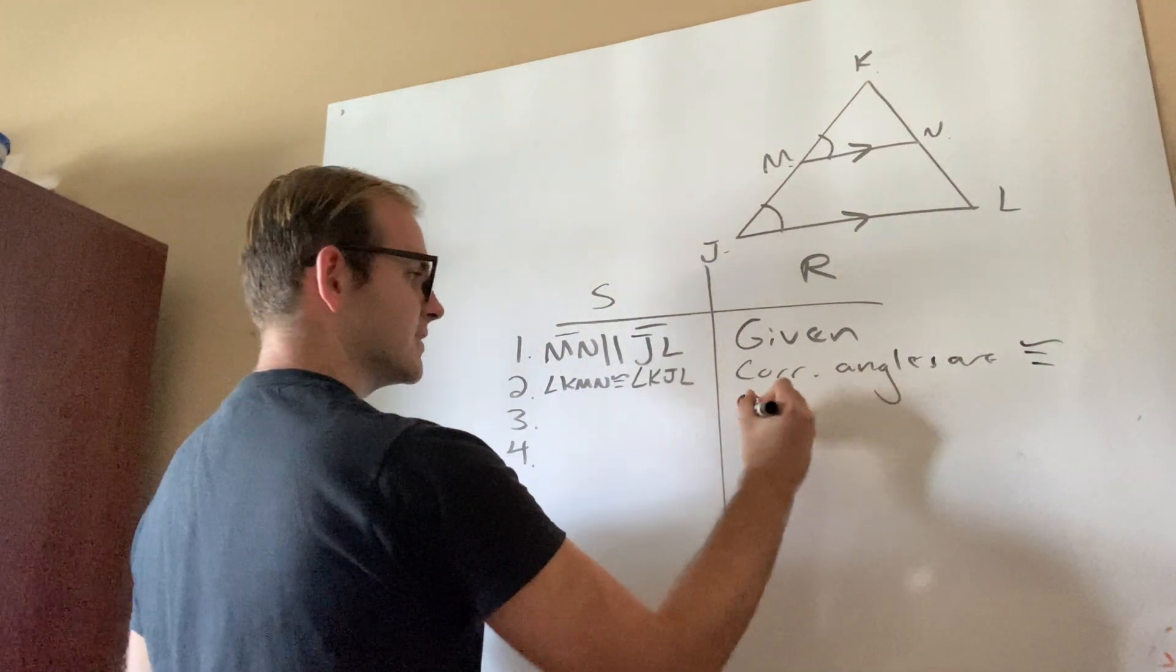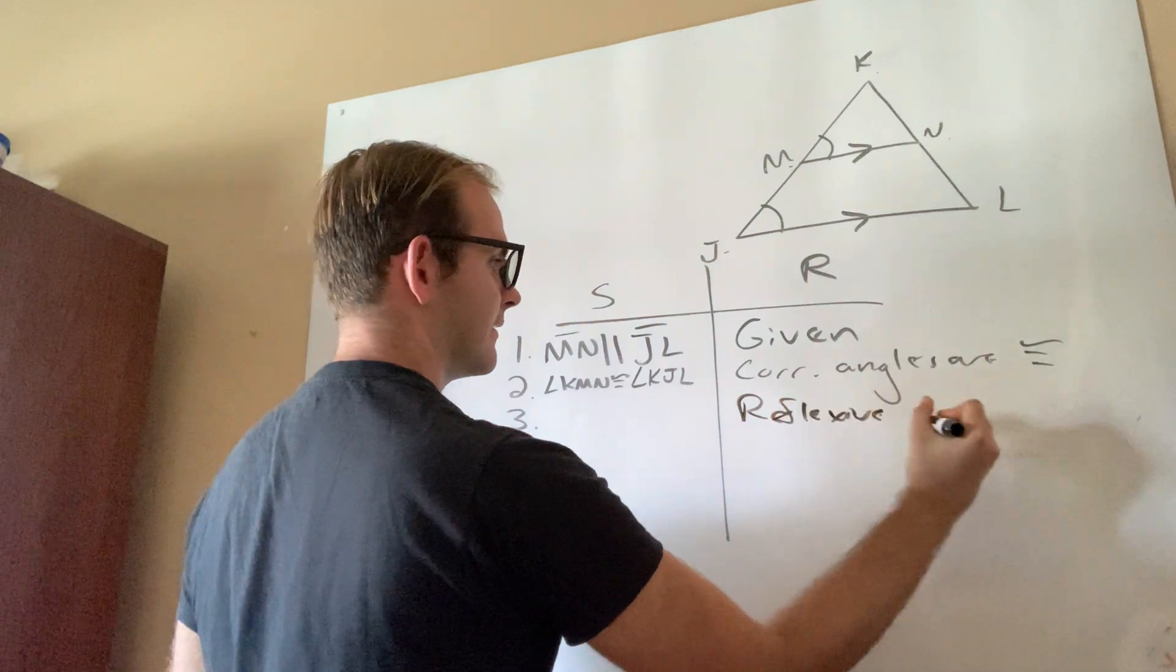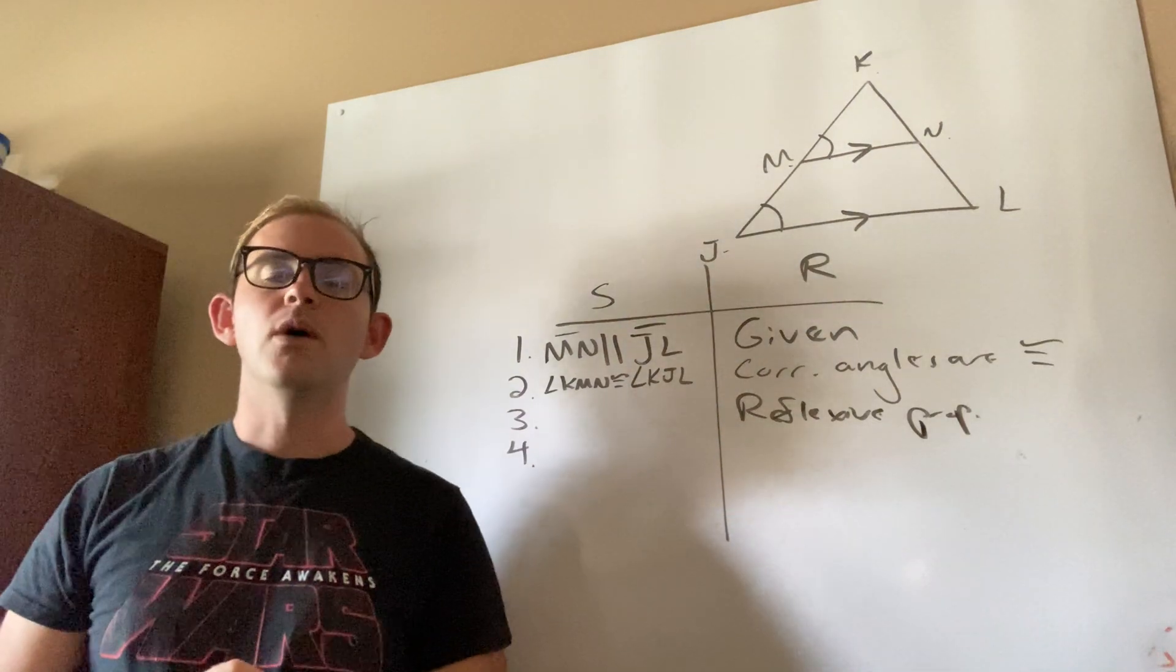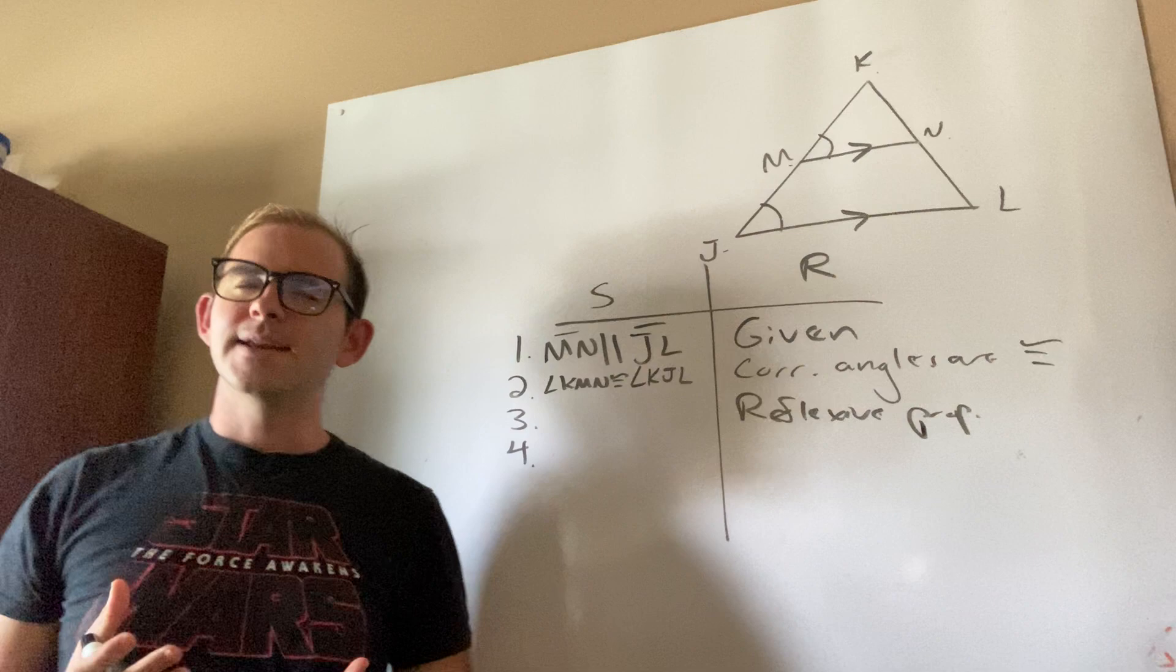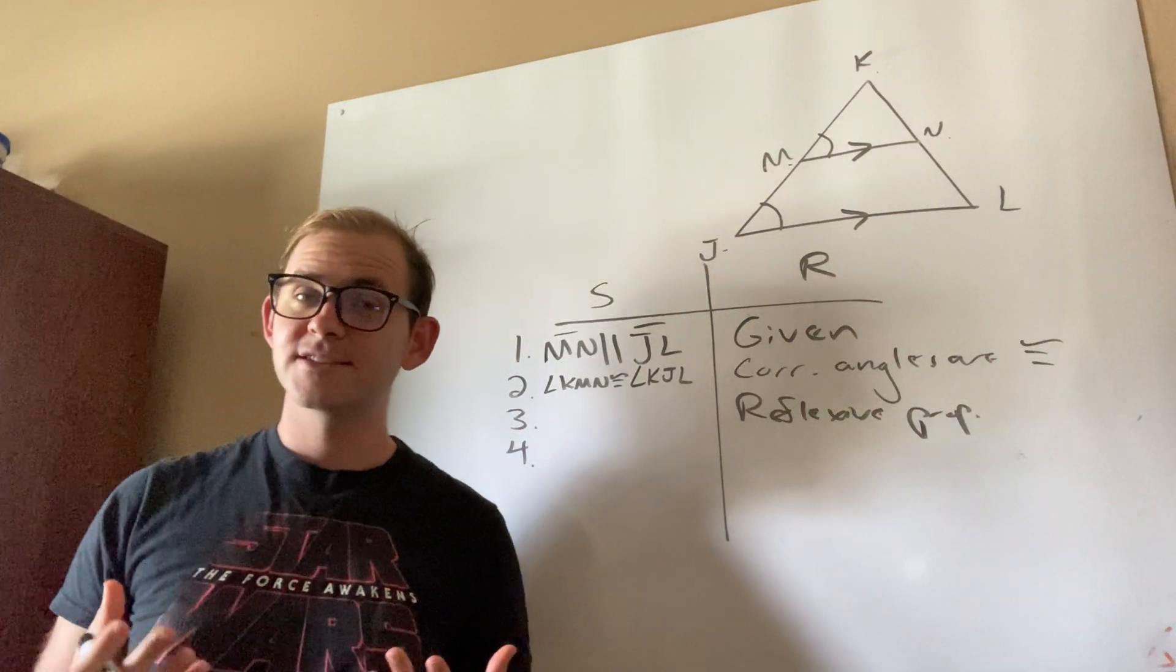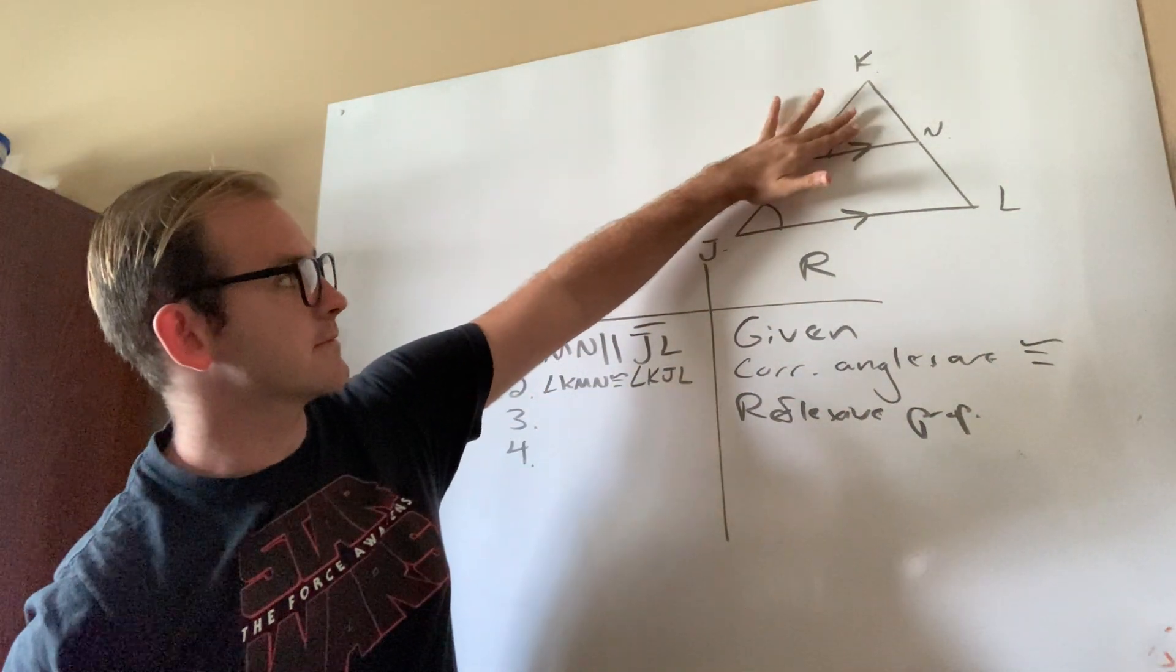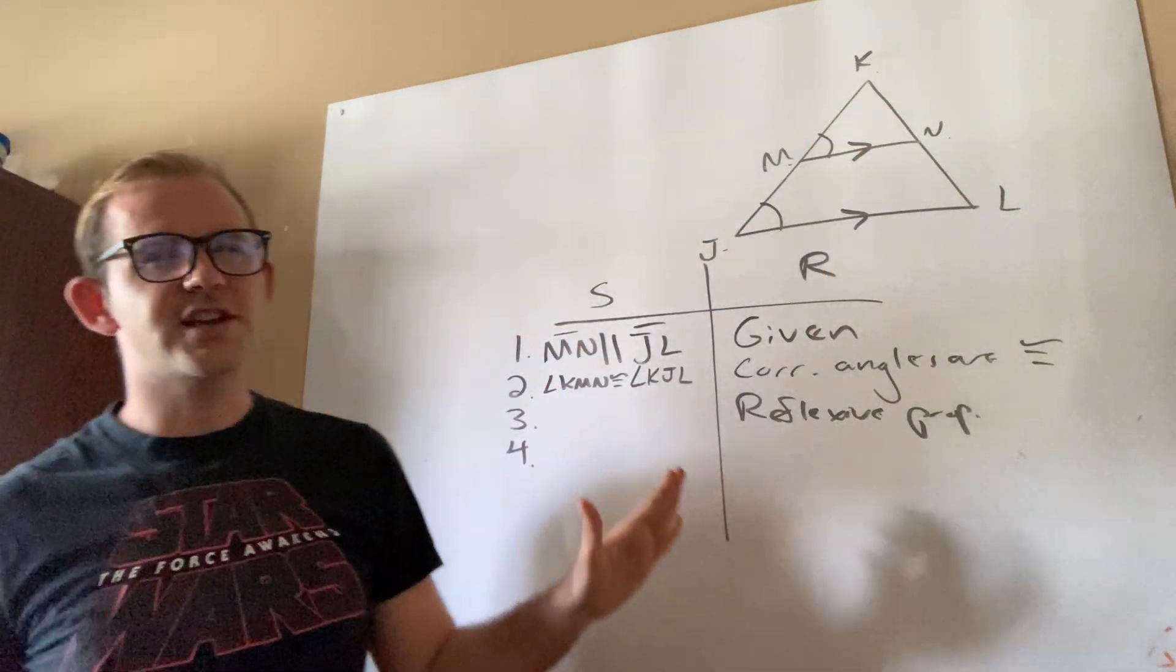Now, for this next one, they actually gave us something interesting. They gave us the reflexive property. Now, we said in unit five that the reflexive property was generally used when we were talking about shared sides. Now, in this particular case, we're going to actually extend it to a case where there's a shared angle. So take a look at this itty-bitty triangle up here and then consider the whole triangle, triangle JKL.